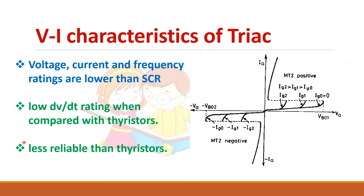The VI characteristics of TRIAC are similar to that of an SCR, because it is also an SCR connected in anti-parallel. The dV/dt rating is lower in TRIAC compared to a thyristor, and it is less reliable because it is a bi-directional device. When you apply the reverse voltage for one thyristor, it acts as a positive voltage for the other thyristor, so there is a probability of getting turned on. Therefore reliability is less in TRIAC.